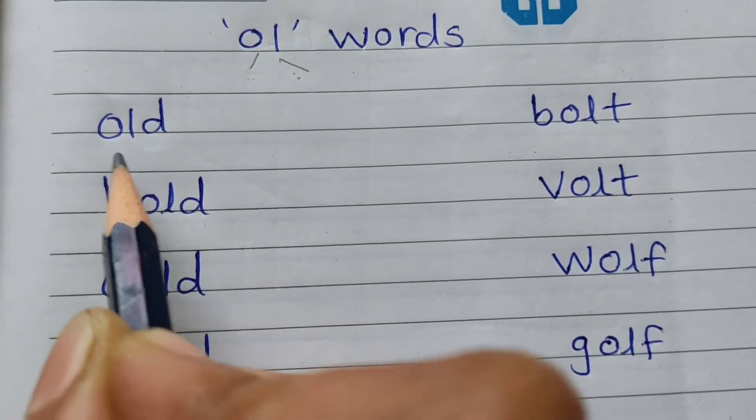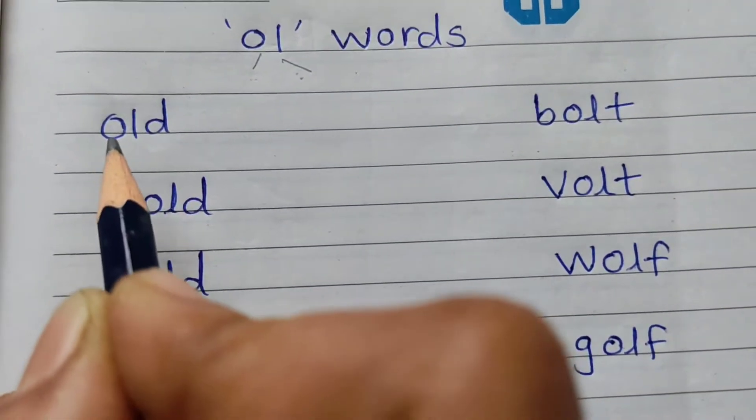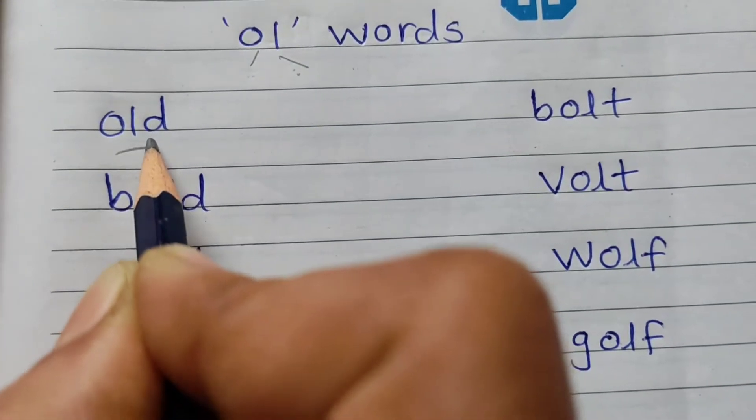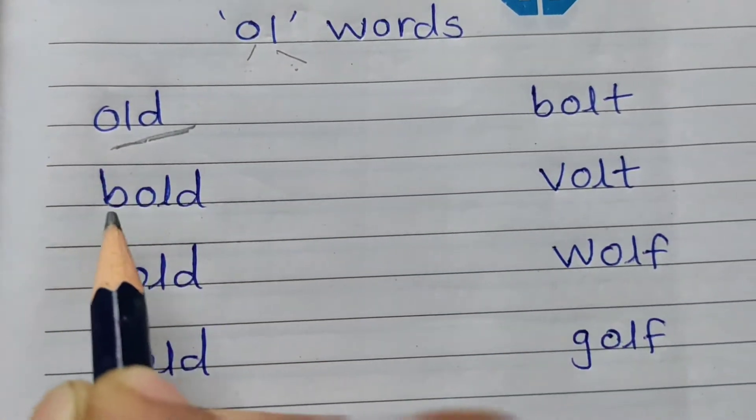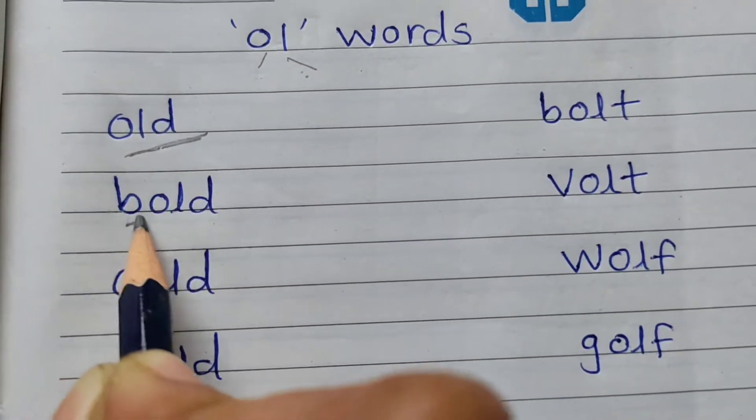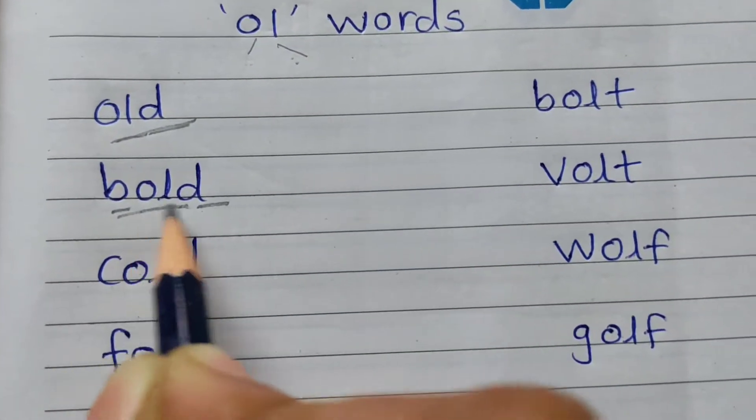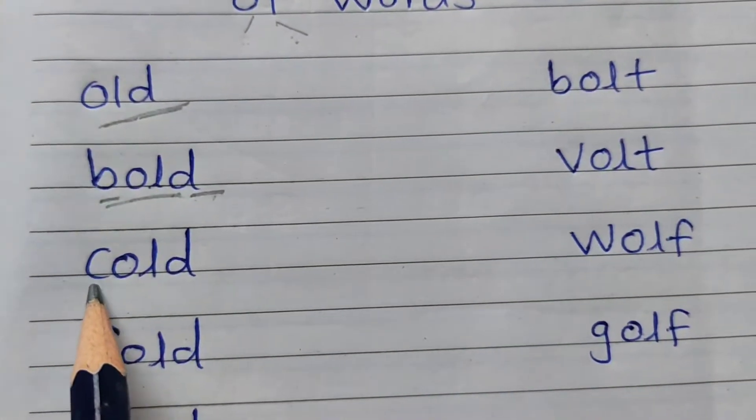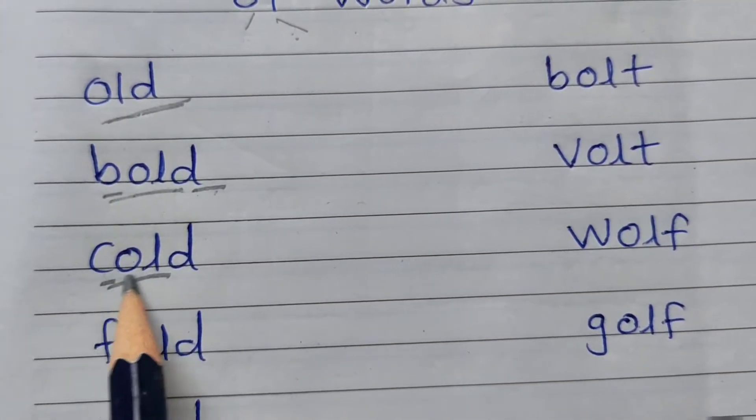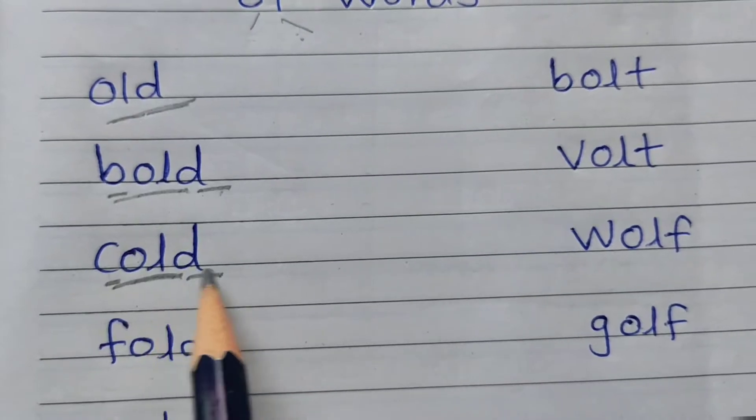Now read these all words. O-L-D, old. B-O-L-D, bold. C-O-L-D, cold.